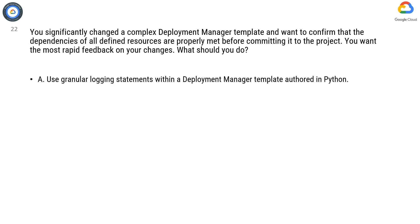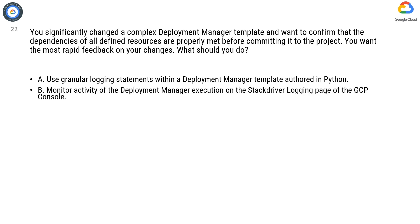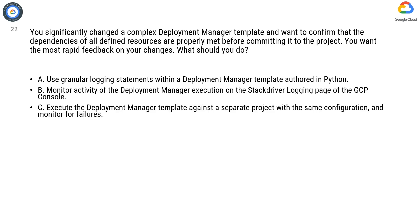Option A: Use granular logging statements within a deployment manager template authored in Python. Option B: Monitor activity of the deployment manager execution on the Stackdriver logging page of the GCP console. Option C: Execute the deployment manager template against a separate project with the same configuration and monitor for failures.